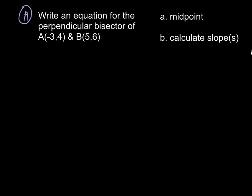So an application of these concepts, we find in this problem. Write an equation for the perpendicular bisector of a line from A(-3, 4) and B(5, 6). So if we just sketch this out, we have negative 3, 4, here is A, and 5, 6, B.